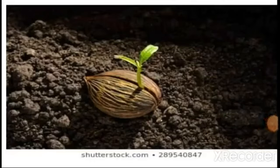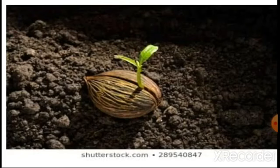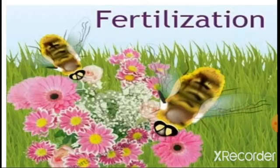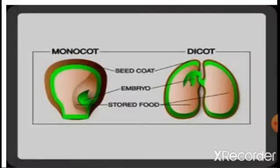Do you know how plants reproduce from seeds? Seed plants have special structures where male and female cells join together through a process called fertilization. After fertilization, a tiny plant called an embryo is formed inside a seed. The seed protects the embryo and stores food for it.